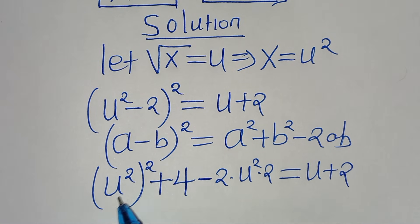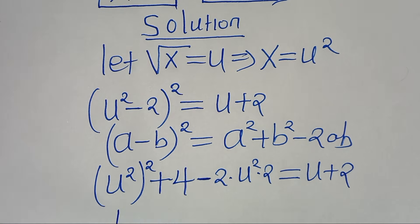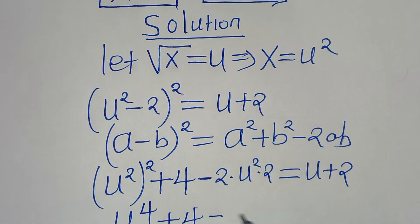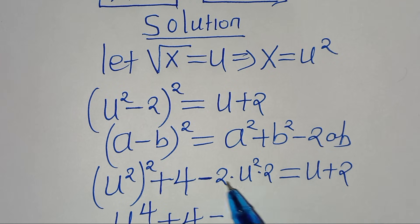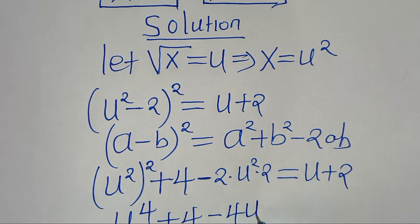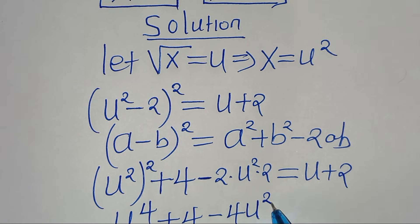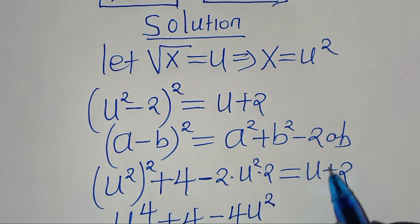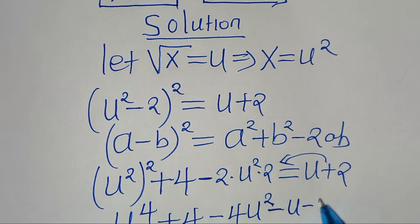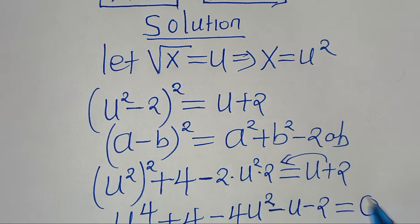So now here we have u to the power of 4, then plus 4, minus 4u squared. Taking u plus 2 to the left hand side, we subtract u and subtract 2, so this is equal to 0.